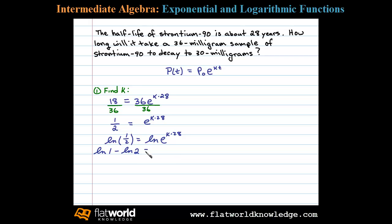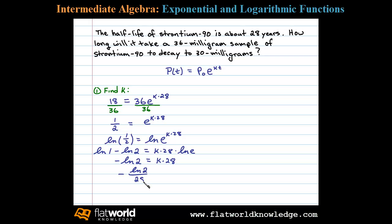On the left side I'll also apply the quotient rule for logarithms, which is equivalent to the natural log of 1 minus the natural log of 2, equals k times 28 times the natural log of e. The natural log of 1 is 0, so we're left with negative natural log of 2 equals k times 28. Dividing both sides by 28, we have k equals negative natural log of 2 divided by 28.